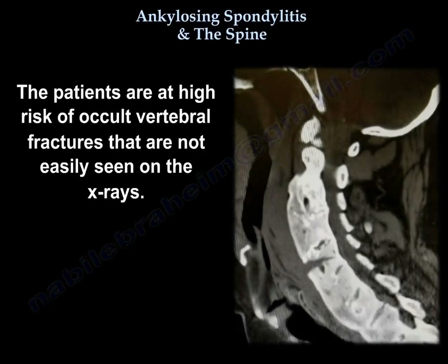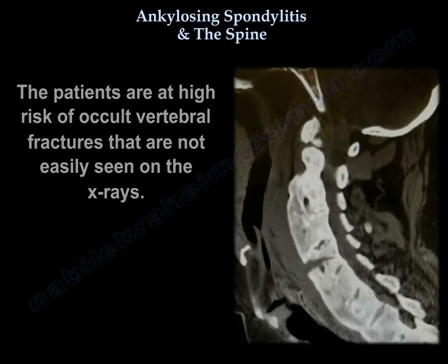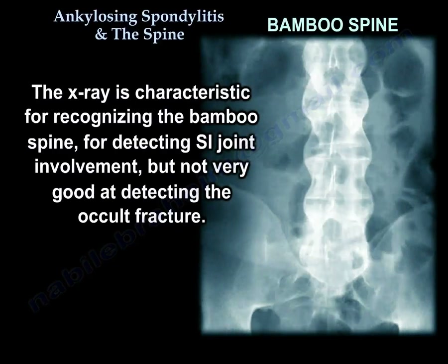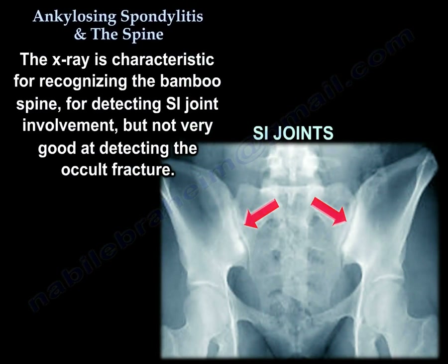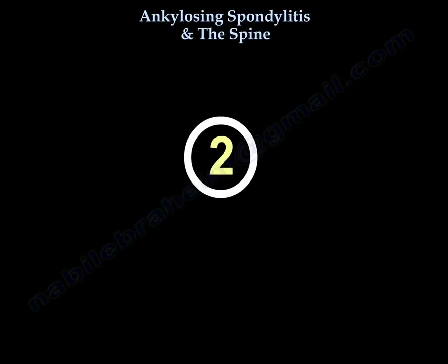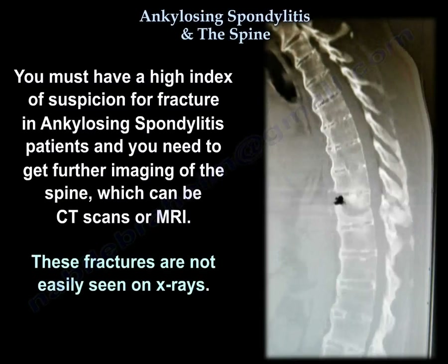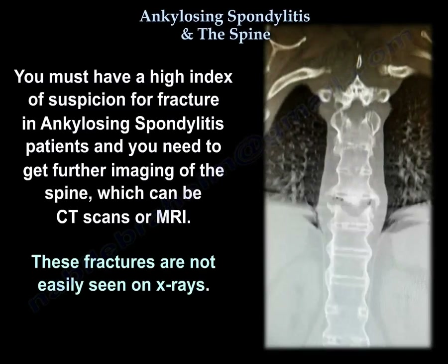Patients are at high risk for occult vertebral fractures that are not easily seen on x-rays. The x-ray is characteristic for bamboo spine and sacroiliac joint changes, but not very good for detection of occult fractures. Number two: you must have a high index of suspicion for fracture in ankylosing spondylitis patients. You need to get further imaging of the spine, which can be CT scan or MRI, since their fractures are not easily seen on x-rays.